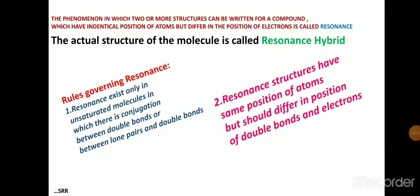There are many organic compounds which cannot be accurately represented by a single structure. Due to the mesomeric effect, two, three or more different structures of a single molecule are possible. Resonance is the phenomenon in which two or more structures can be written for a compound which have an identical position of atoms but differ in the position of electrons. In resonance, the atoms remain in the same place but only the position of the electrons changes.